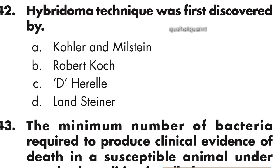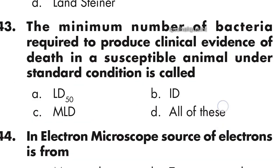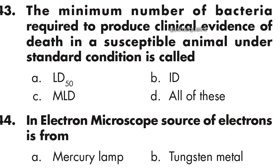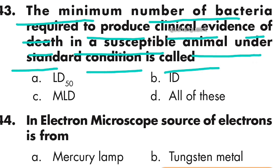Question number 42: The hybridoma technique was first discovered by Kohler and Milstein. Option A is right — Kohler and Milstein. Question number 43: The minimum number of bacteria required to produce clinical evidence of death in a suspected animal under standard conditions is called MLD (Minimum Lethal Dose). Option C is right — MLD.